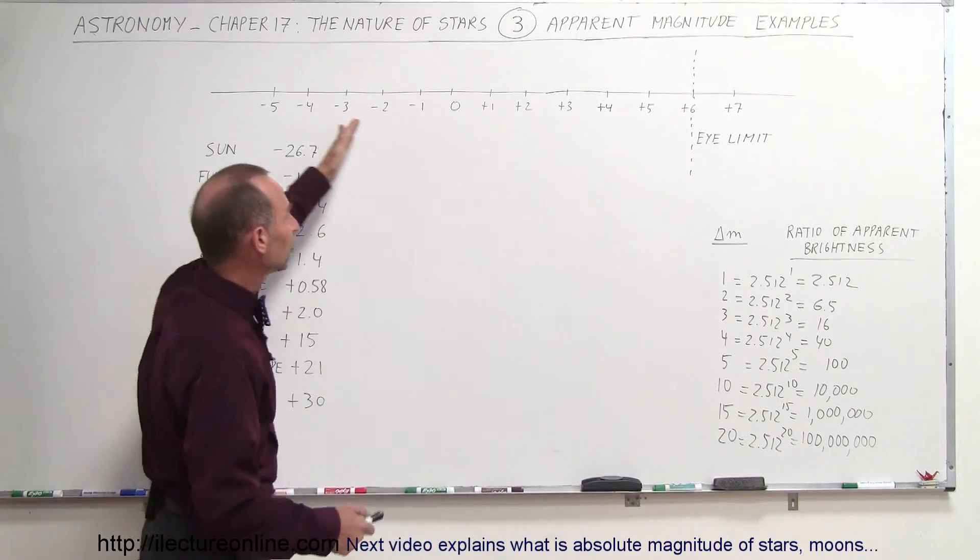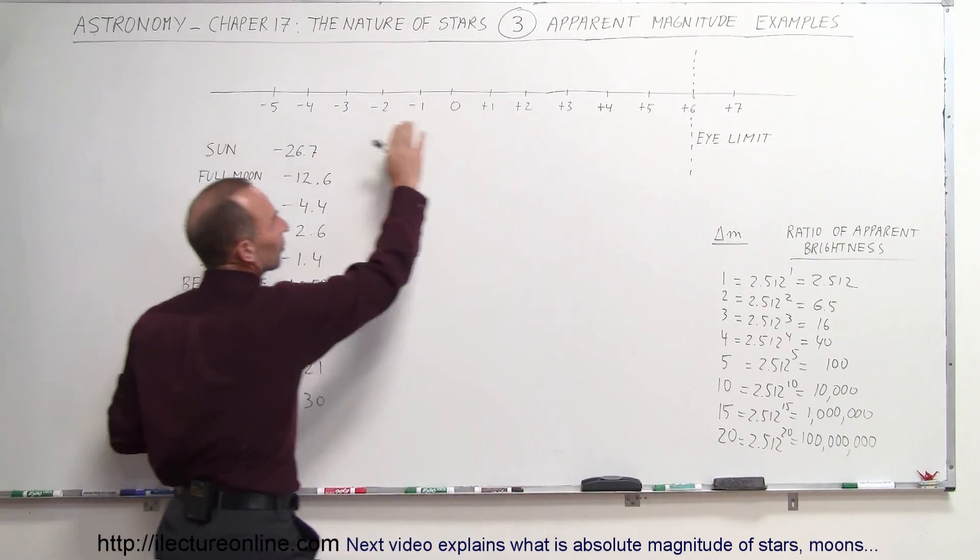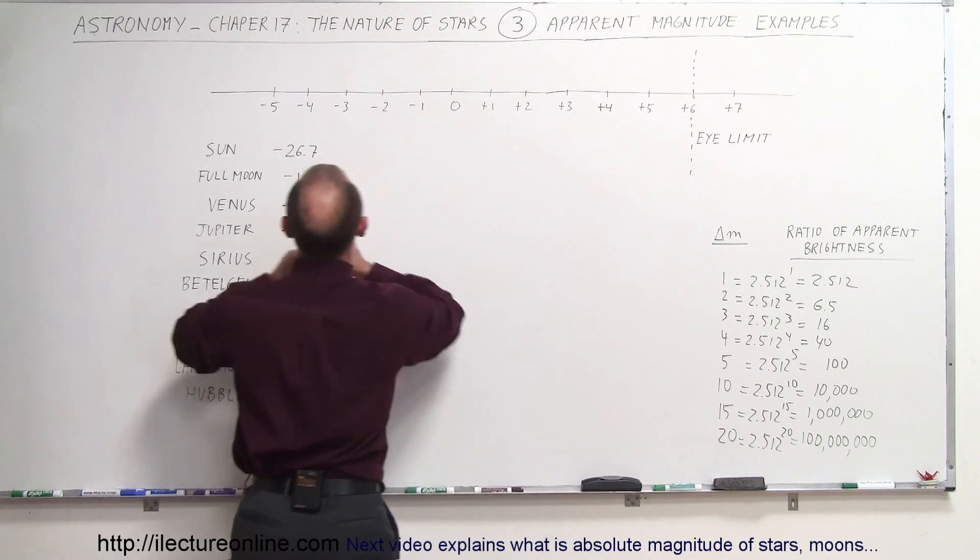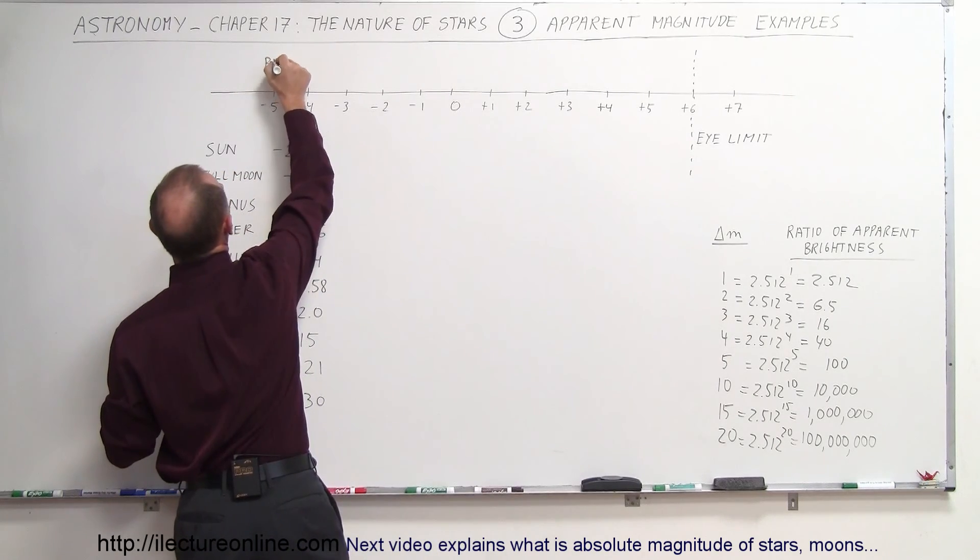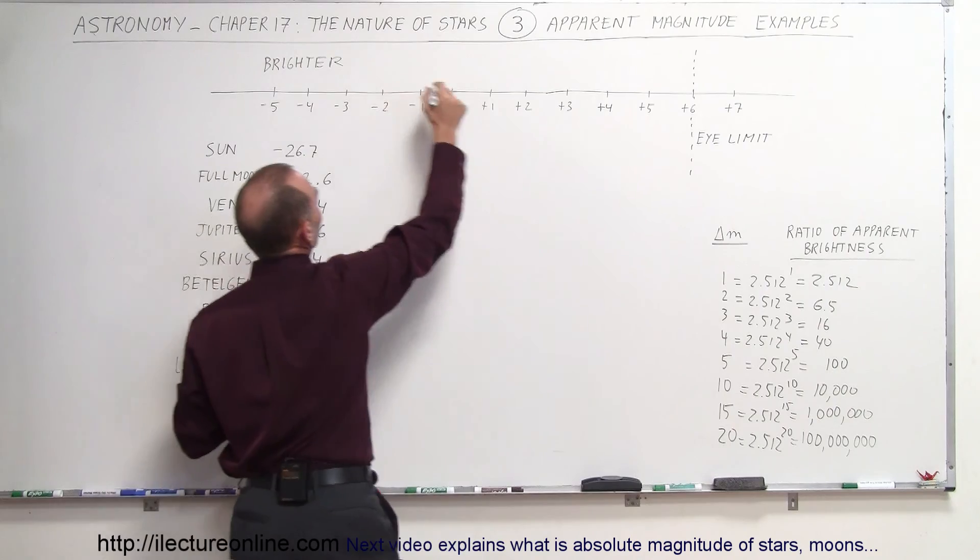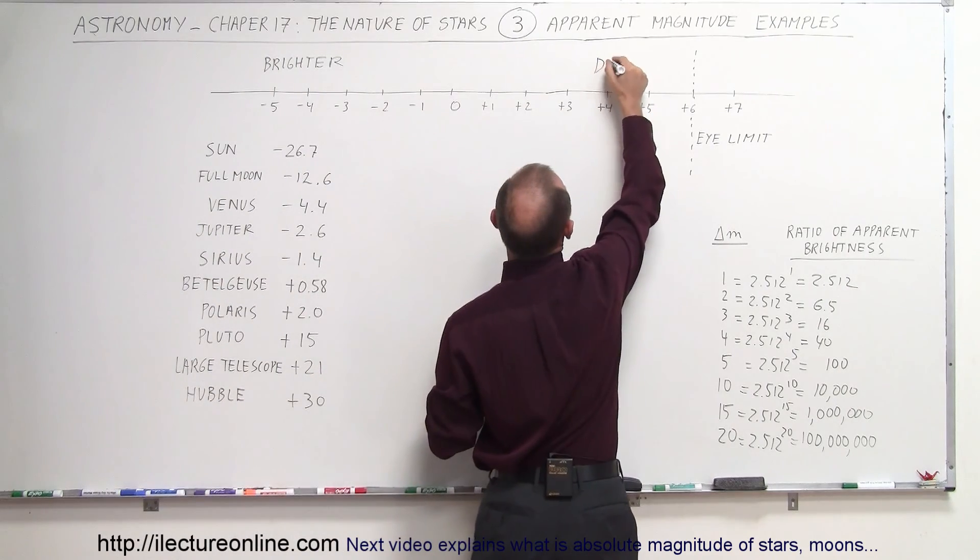Negative values or smaller values are brighter, larger values are dimmer. So it's brighter on this side of the scale and it's dimmer on this side of the scale.